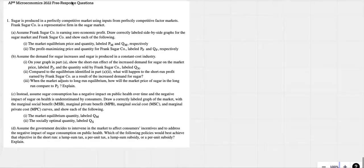Let's see if we can do 2022. This is set to micro. Obviously micro. Sugar is produced in a perfectly competitive market using input from perfectly competitive factor markets. Frank Sugar Company is representative of the sugar market. Assume Frank Sugar Company is earning zero economic profits.